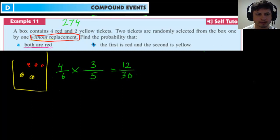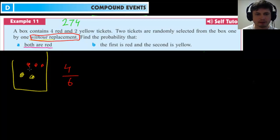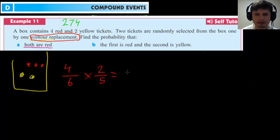Part B: the first ticket is red and the second is yellow. First draw: 4/6 for a red ticket. After removing it, five tickets remain — three red and two yellow. The chance of drawing a yellow second is 2/5. So P(first red AND second yellow) = 4/6 × 2/5 = 8/30.